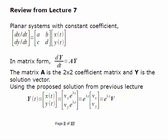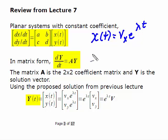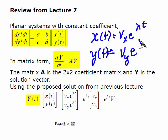For a quick review, we have a system of two first-order linear differential equations with constant coefficients, written in matrix form and abbreviated as y' = Ay, where y is the solution vector and A is the 2x2 coefficient matrix. We made an assumption that the solutions x(t) and y(t) have closed-form solutions: a constant vector (vx, vy) times e to the lambda t.